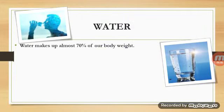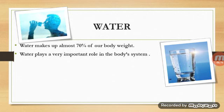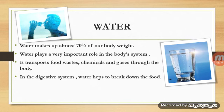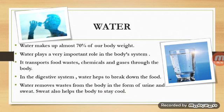Water makes up almost 70% of our body weight and is the most essential and basic need of living things. Water plays a very important role in the body's system: it transports food, waste, chemicals, and gases through the body. In the digestive system, water helps to break down food and removes waste from the body in the form of urine and sweat. Sweat also helps the body stay cool.